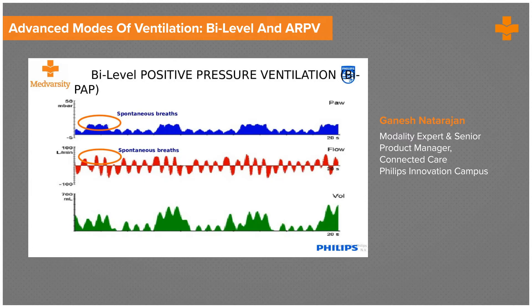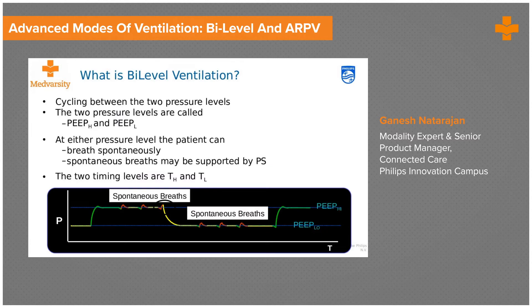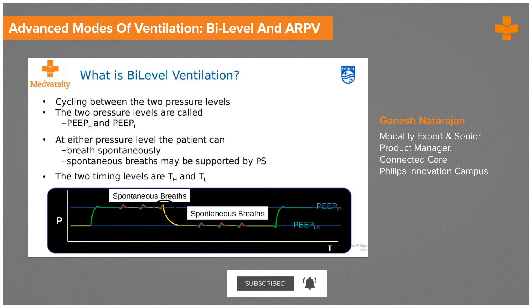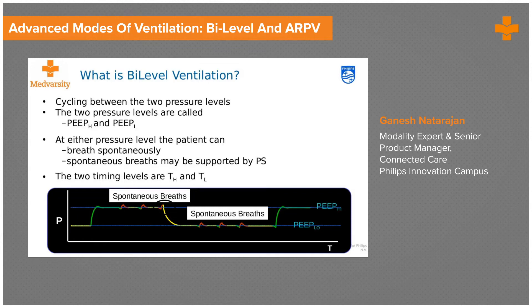Bi-level positive airway pressure is essentially pressure control ventilation with the ability to breathe anywhere in the cycle — that is the key difference from conventional PCV. When a spontaneous breath occurs in bi-level, you still have the IPAP and EPAP, and each effort is spontaneous. A trigger can be set at each pressure level, and a pressure support can also be set. At either pressure level the patient can breathe spontaneously, supported by pressure support, and if the patient is not breathing spontaneously it works like a timed mode.